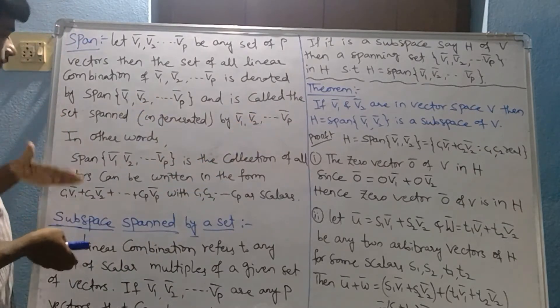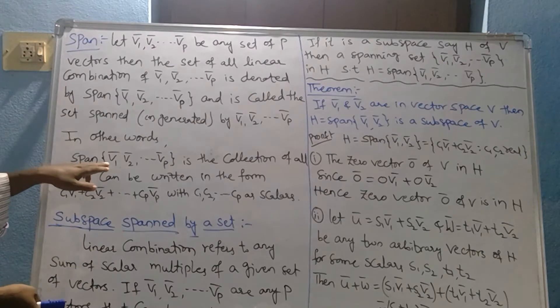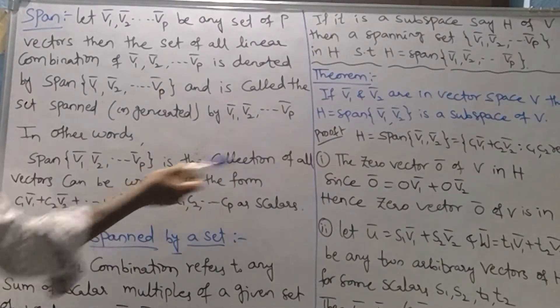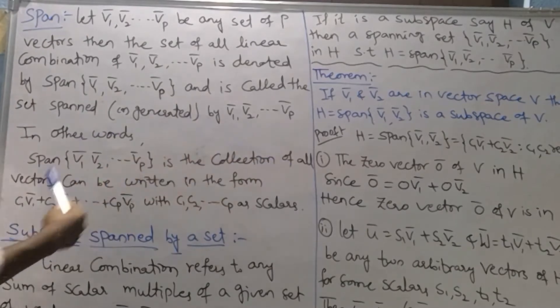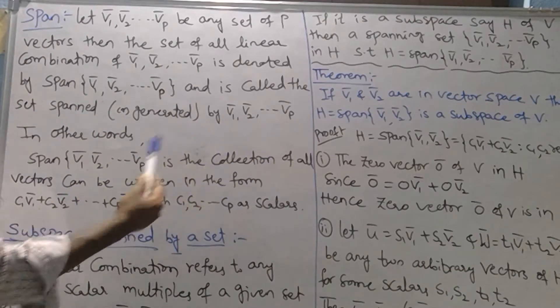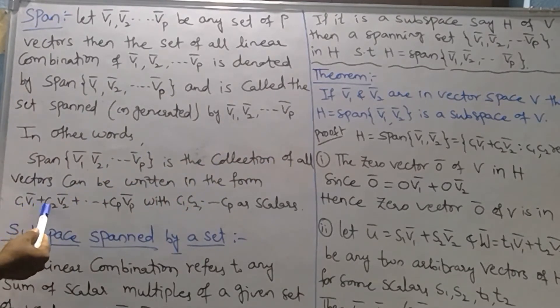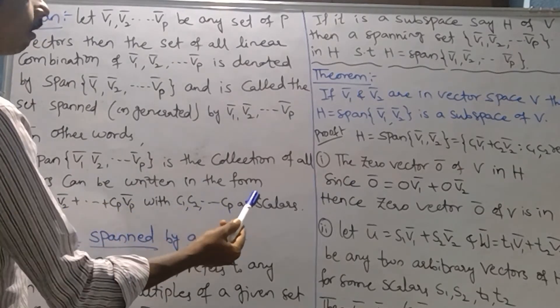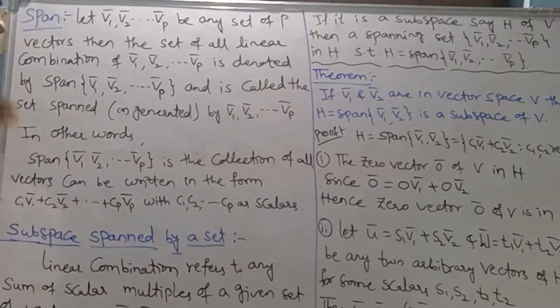In other words, span of V1 bar, V2 bar, so on Vp bar is the collection of all vectors that can be written in the form C1 into V1 bar plus C2 into V2 bar plus so on Cp into Vp bar, with C1, C2, so on Cp as scalars. This is the span definition, remember this one.